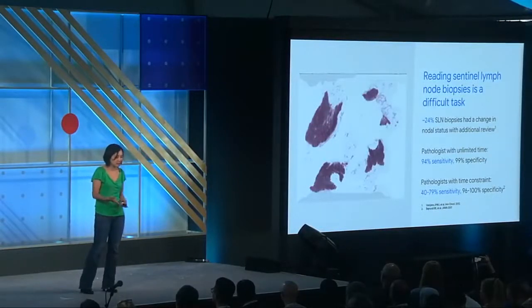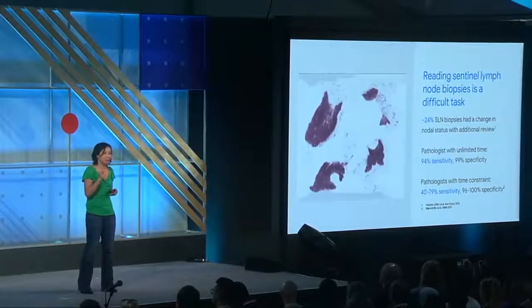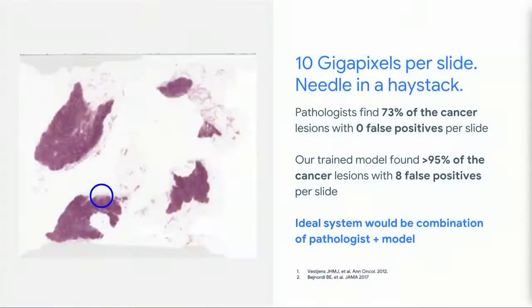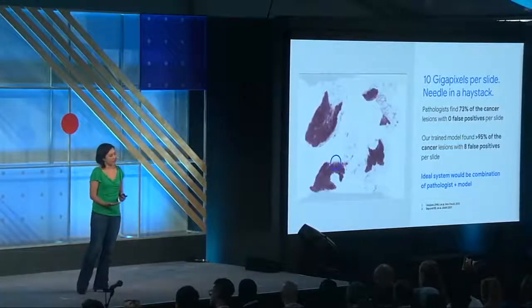That's a really big deal — one in four. Interestingly, another study showed that a pathologist with unlimited time and not overwhelmed with data has 94% sensitivity in finding tumors. But when you put time constraints on the pathologist, sensitivity drops and people start overlooking small metastases. One of these digitized slides is about 10 gigapixels — literally a needle in a haystack. Pathologists can find 73% of cancers if they spend all their time looking with zero false positives per slide. We trained a model that finds about 95% of cancer lesions with eight false positives per slide.